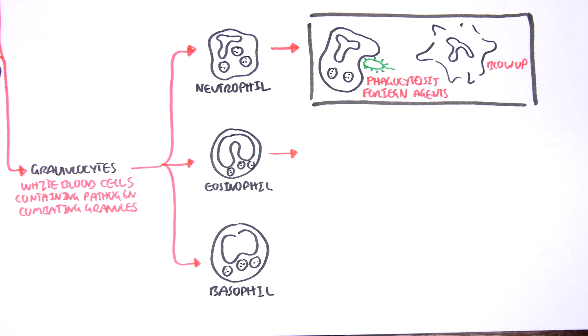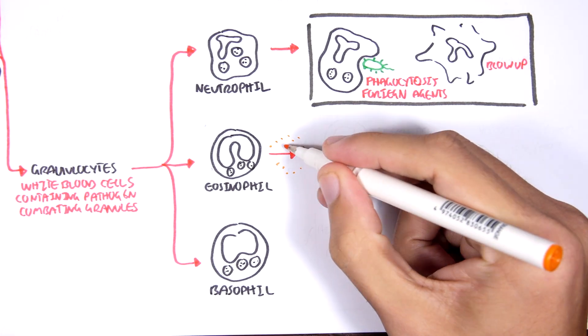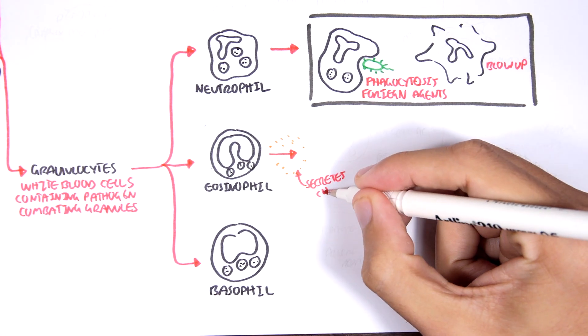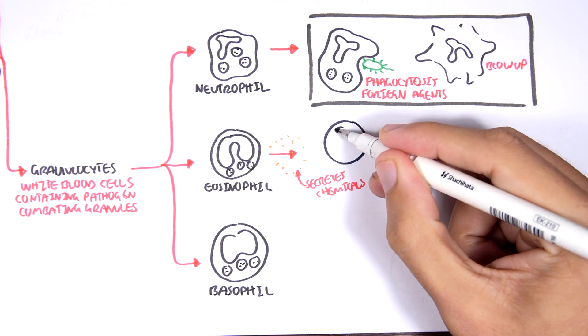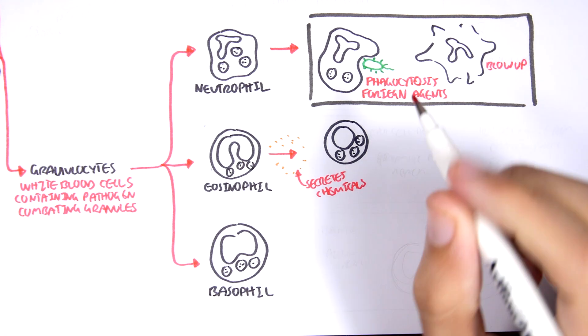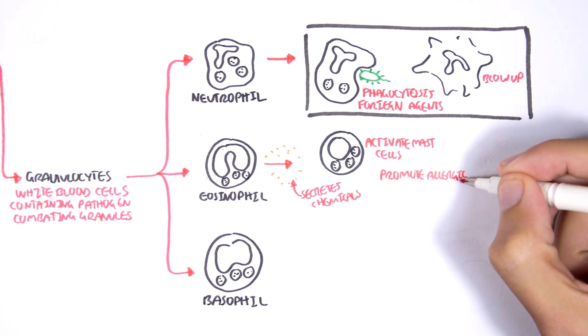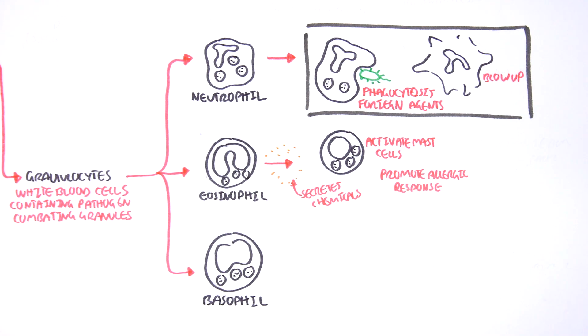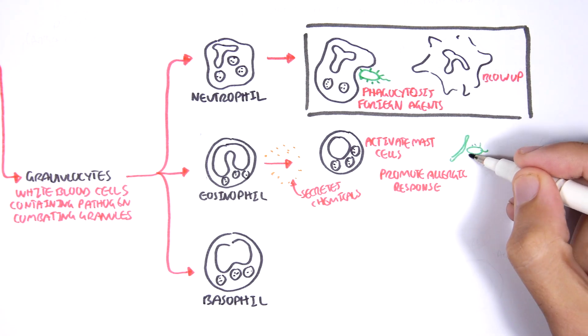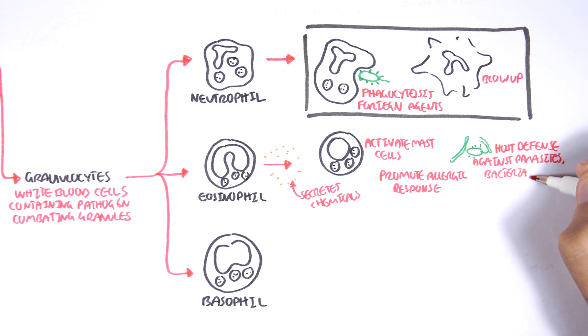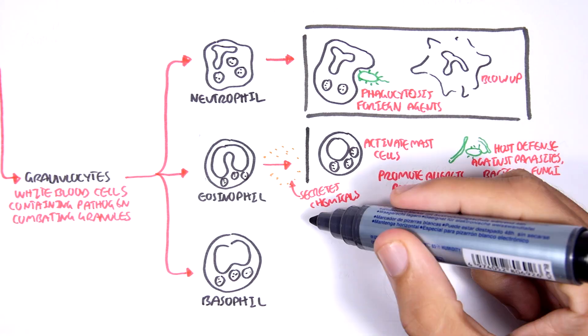The eosinophils are basically cells that are part of the allergic response. They secrete chemicals that will activate another cell called mast cells, and this will essentially promote the allergic response. Eosinophils also have a role in host defense against parasites, bacteria, and fungi. And eosinophils are seen quite, they're a big factor in the pathogenesis of asthma.